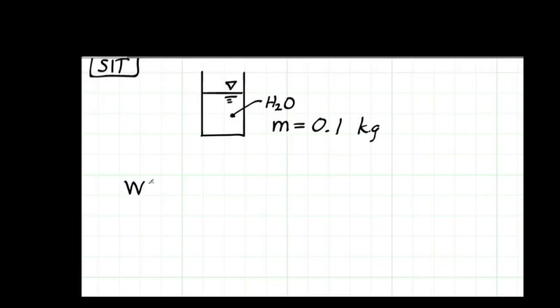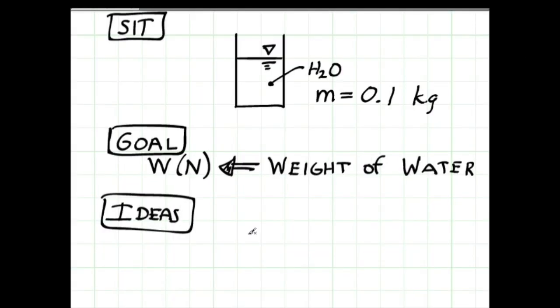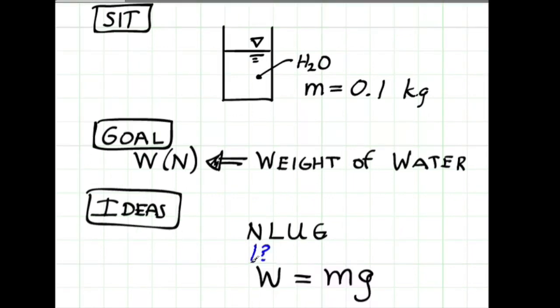I'll define my goal. What I want to calculate is the weight in Newtons of the water. So I'll make a brief text label. Now I suspect I can solve this problem by applying Newton's law of universal gravitation. I note that the equation has my goal in it. I symbolize that with a question mark with a box around it, so there's my goal.